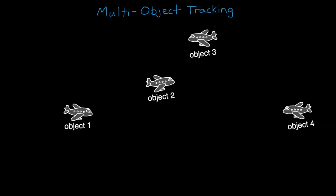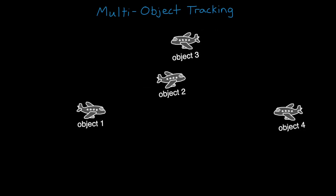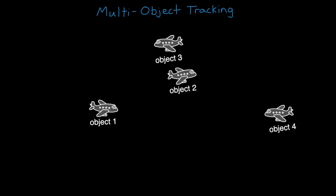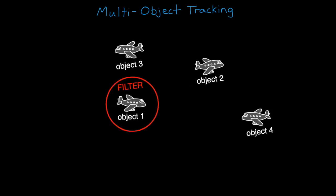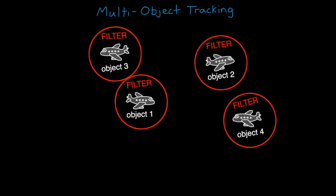At first glance, it doesn't seem like this problem is that much harder than tracking a single object. For example, can't we just take a tracking algorithm like the IMM from the last video and apply one to each object and be done?